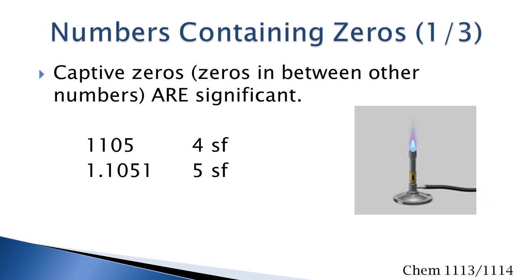In numbers containing zeros, there are three different situations. The first one is captive zeros, which are zeros that fall in between other numbers, and these zeros are significant. In the top number, you would count that zero, so there would be four significant digits in that number. In the bottom number, you would count that zero also, and that number has five significant figures.